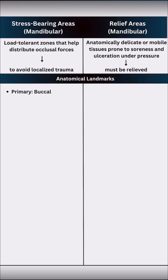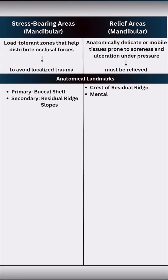In the mandible, your primary stress-bearing area is the buccal shelf area and the secondary one is the residual ridge slopes. Relief areas include the crest of the residual ridge, mental foramen, mylohyoid ridge, genial tubercles, and torus mandibularis.